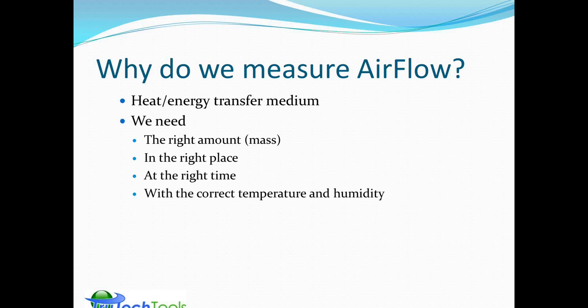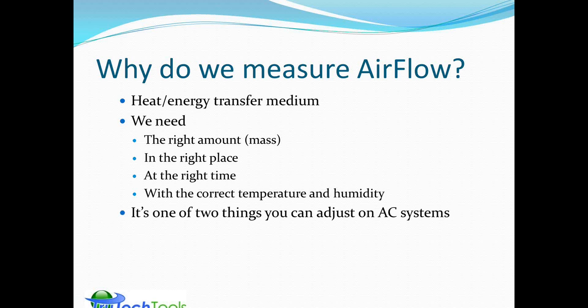In order to make airflow an effective way of transferring heat or energy, we need to have the right amount of air — which amounts to the right mass of air — in the right place at the right time with the correct temperature and humidity. That's basically what we're trying to deliver: the correct airflow to generate comfortable conditions. It's really one of two things you can effectively adjust in an air conditioning system.